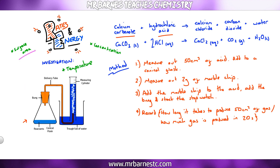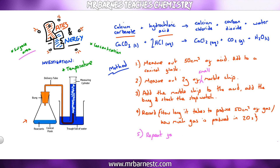For surface area: instead of two grams of marble chip, use two grams of small marble chip, then repeat for other surface areas — large marble chips, medium marble chips, powdered marble chip — and record the time to see what the difference is.